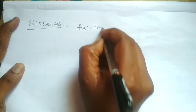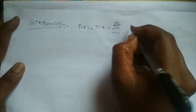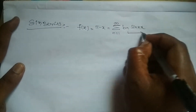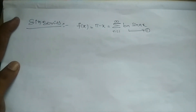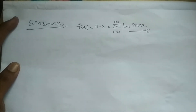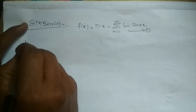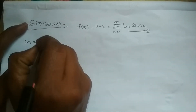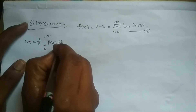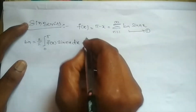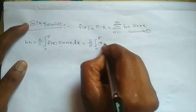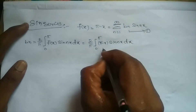Now Fourier sine series for the same problem, which is given by f(x) = π - x = summation n=1 to infinity bₙ sin(nx), called equation number 1. This is the second part of the problem. Sometimes a problem asks for only sine or cosine series, but this problem includes both, that's why we go with the second solution. bₙ = (2/π) integral 0 to π f(x) sin(nx) dx. Substituting f(x): bₙ = (2/π) integral 0 to π (π - x) sin(nx) dx.